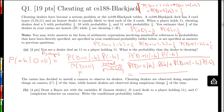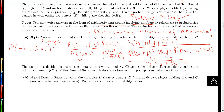Now we have all quantities available and we can fill them in. For the numerator: P(11 | ¬H) is 1/4, and P(¬H) is 1/5. For the first term in the denominator: P(11 | +H) is 1/3, and P(+H) is 4/5. The second term in the denominator is identical to the numerator, so we copy over 1/4 times 1/5. At this point we have a complete arithmetic expression, so we're done for this part.